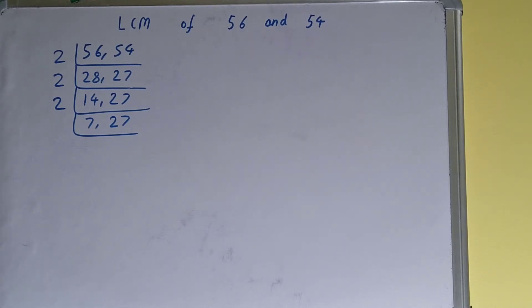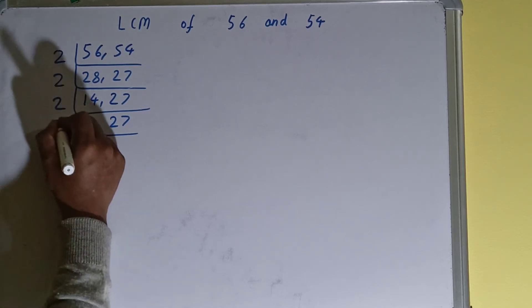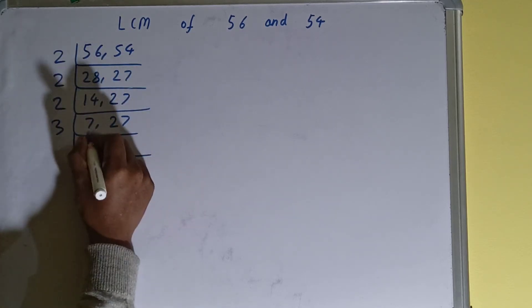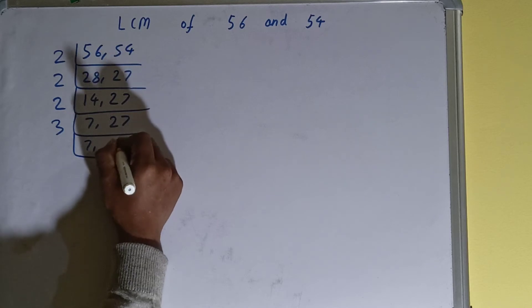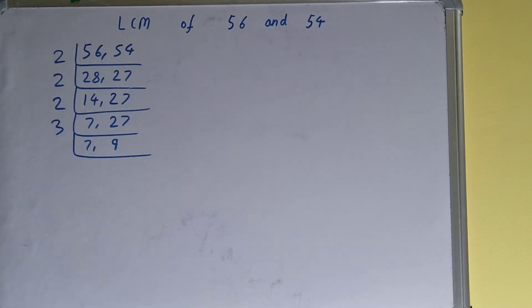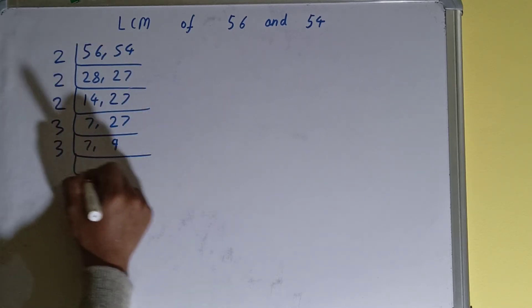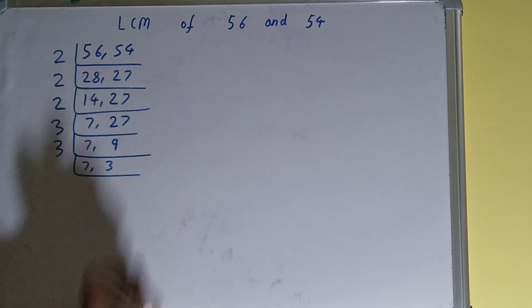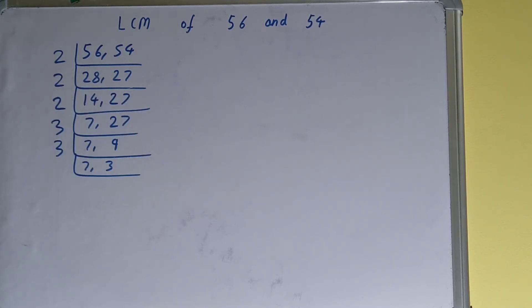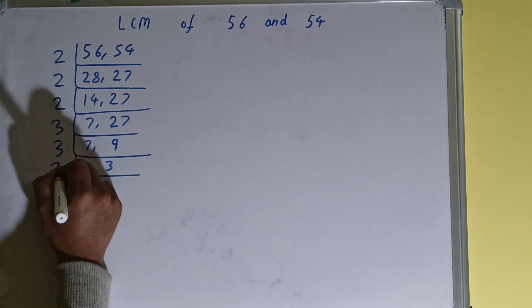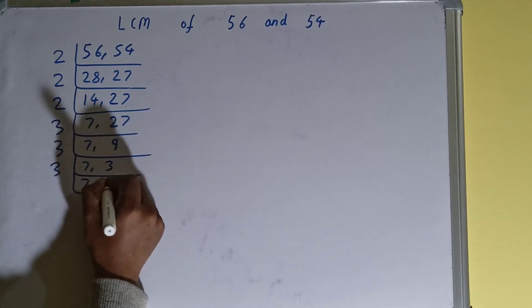Now again, if we check, none of the numbers are divisible by 2, so we'll go to the next lowest prime number, that is 3. The second number is divisible by 3, so we'll divide. The first one we'll just copy down. The second number will become 9. Again, the second number is divisible, so we'll divide and we'll be left with 7, 3. Once again, the second number is divisible, so we'll divide and we'll be left with 7, 1.